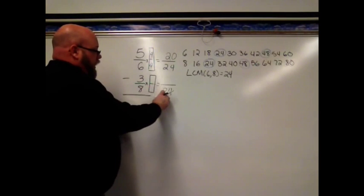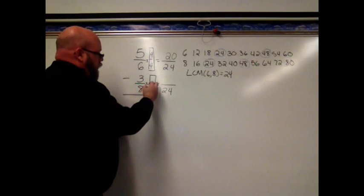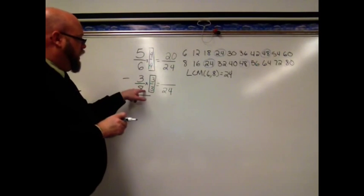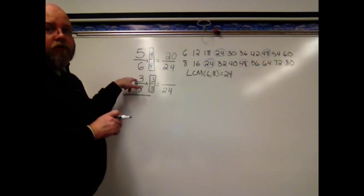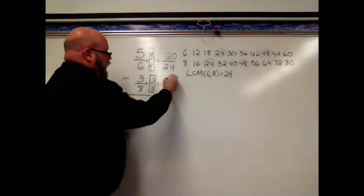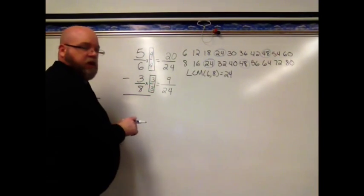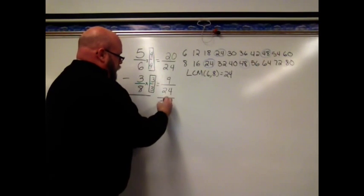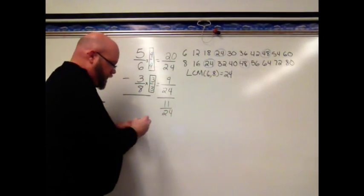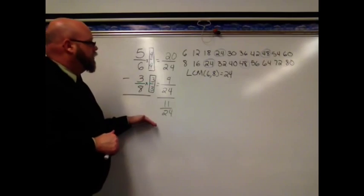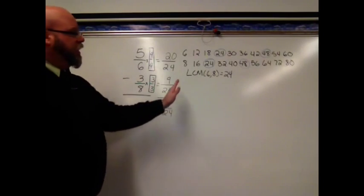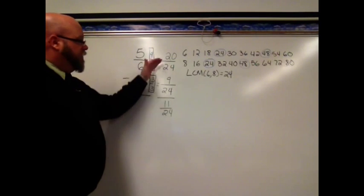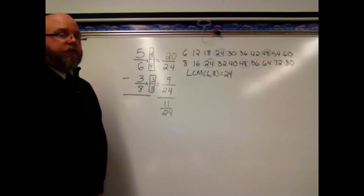3 eighths times what? 8 times what is 24? Well, that's 3. So my fraction equal to 1 is 3 thirds. Whatever happens to the denominator, I have to also do it to the numerator. 3 times 3 is 9. So 3 eighths gets renamed 9 24ths. 20 minus 9 is 11 24ths when I subtract. So I'm using the least common multiple to become the least common denominator, so I have a common denominator when I subtract and add fractions.